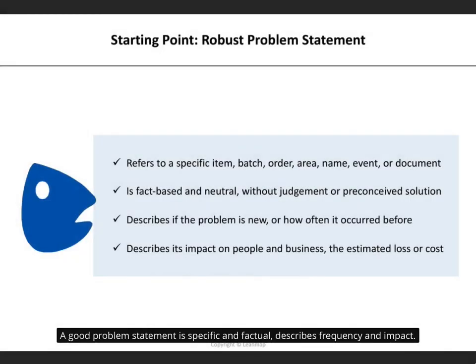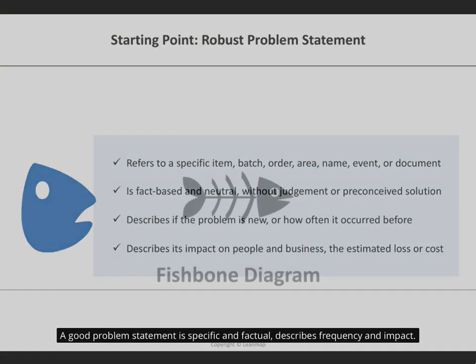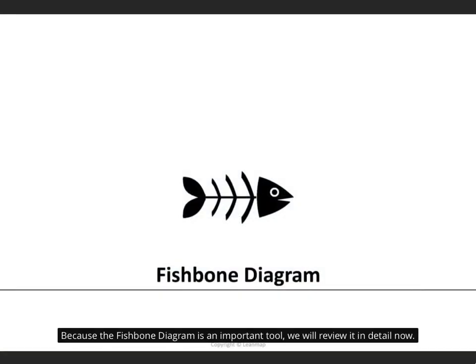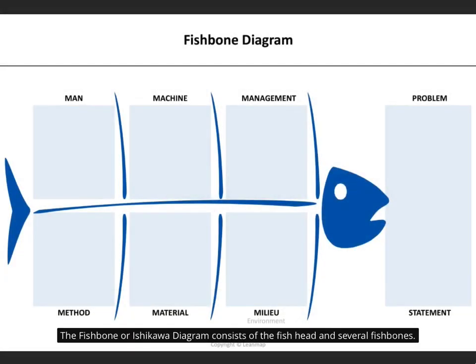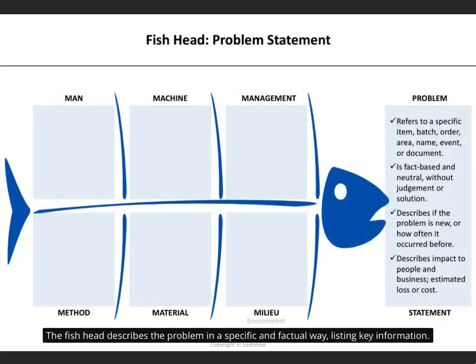A good problem statement is specific and factual, and describes frequency and impact. Because the fishbone diagram is an important tool, we will review it in detail now. The fishbone or Ishikawa diagram consists of the fish head and several fishbones. The fish head describes the problem in a specific and factual way, listing key information.